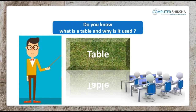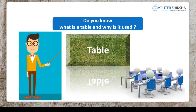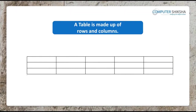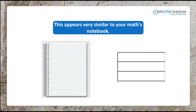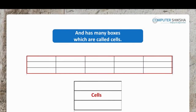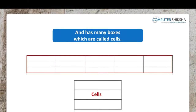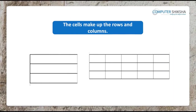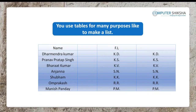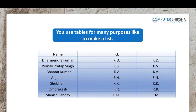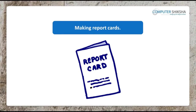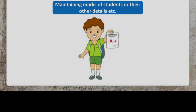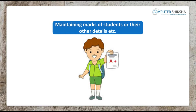Do you know what is a table and why is it used? A table is made up of rows and columns. This appears very similar to your maths notebook and has many boxes which are called cells. The cells make up the rows and columns. You use tables for many purposes like to make a list, for helping you in your office work, making report cards, calendars, maintaining marks of students or their other details etc.